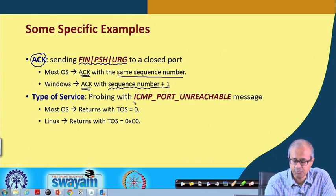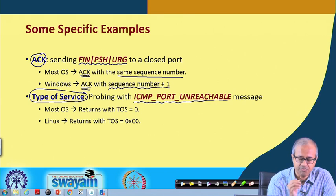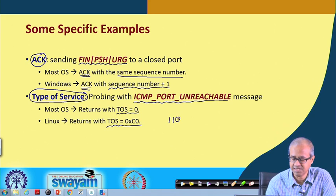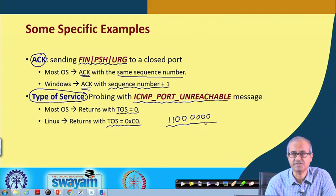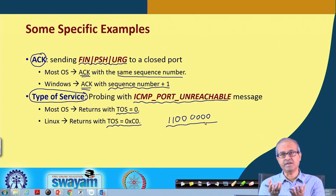Similarly, if you probe with an ICMP port unreachable message and get a response, the type of service field for most operating systems is returned as zero. But on Linux, the type of service is returned as the hexadecimal code 0xC0 — that eight-bit TOS code is characteristic of typical Linux systems. So by looking at the TOS of the response you can clearly identify whether it is Linux or some other operating system.